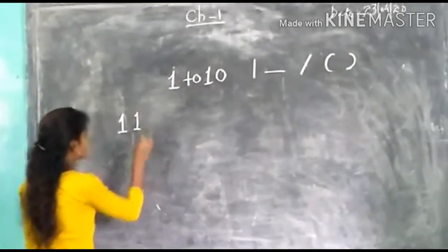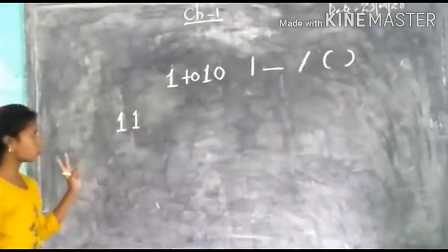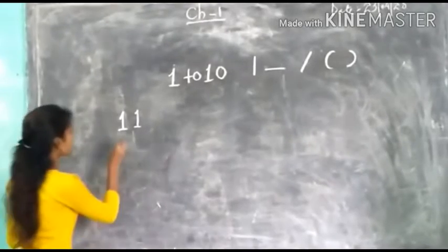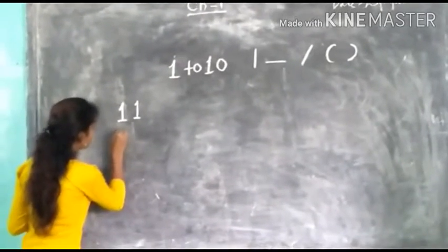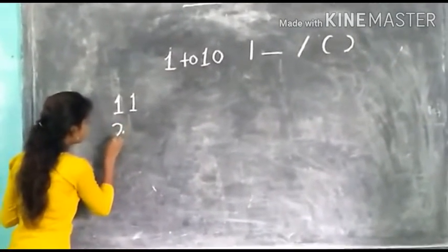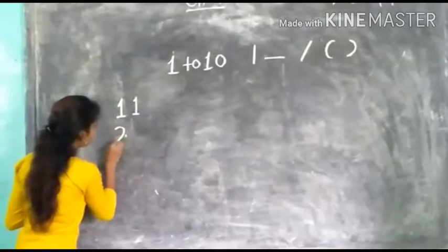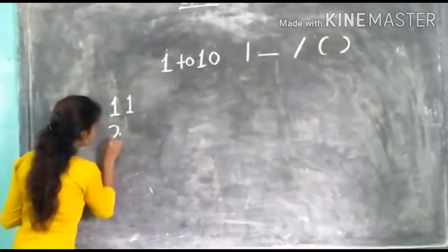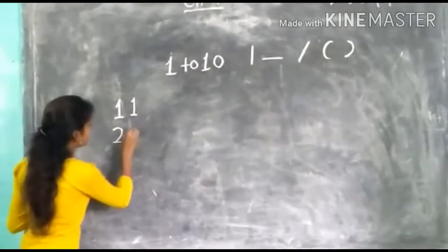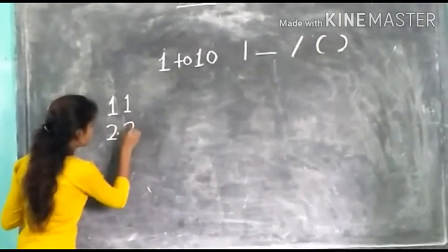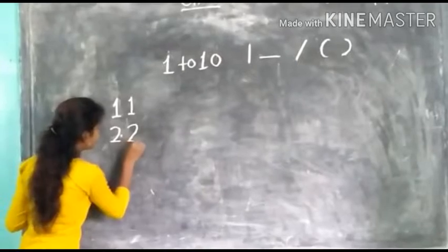Next number is 2. Curve, and sleeping line. This is number 2.